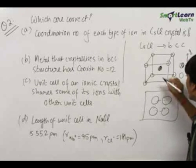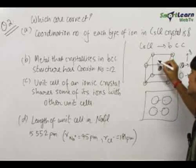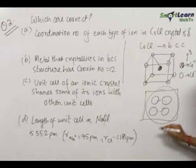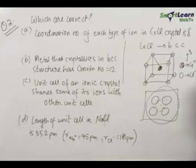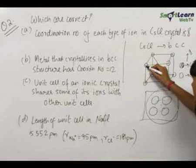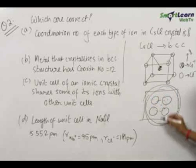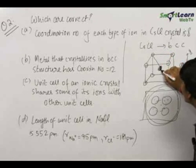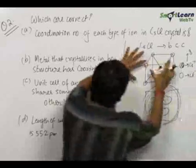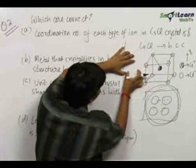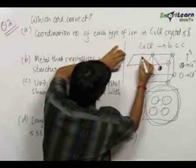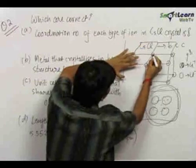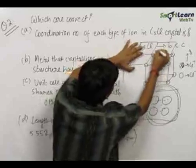For the Cl⁻ ion, this Cl⁻ ion is touching the Cs⁺ ion. It is not touching the other Cl⁻ ions — we can clearly see that this Cl⁻ ion is not touching the adjacent Cl⁻ ions. Therefore, the only atom it touches is the Cs⁺ ion in this unit cell. Just like this unit cell, there will be another unit cell beside it, and another in the downward direction. For all these four unit cells, this Cl⁻ ion will touch the Cs⁺ ion in each of them.